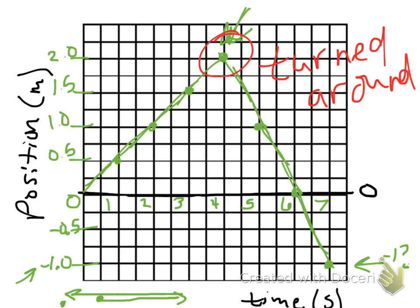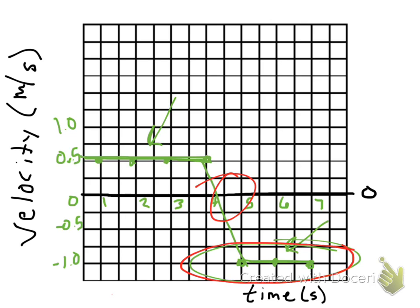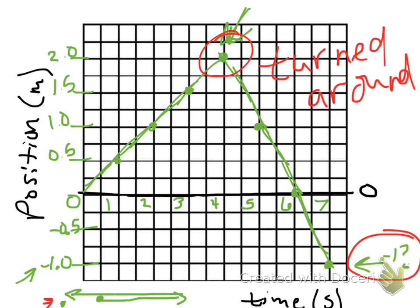There's a difference between being in a negative position — which means ending further back from where you started — and being in a negative velocity, which just means that you're traveling in the opposite direction. So here, let's say this was the dog going to the right, then all of a sudden he turned around and now he's going to the left. If you started at the origin and went on the right side of that point, that's positive position. But he turned around, and as soon as he turned around he had negative velocity — but it wasn't until he passed where he started that he ended up in a negative position.